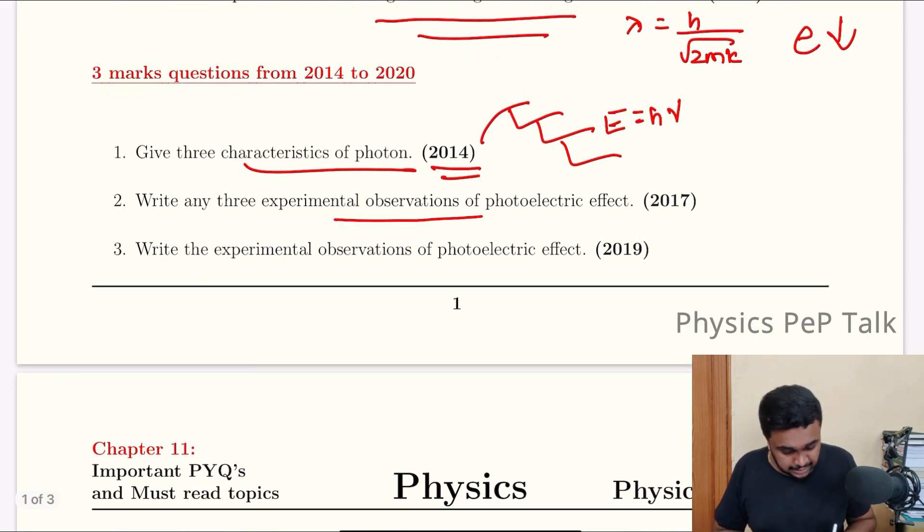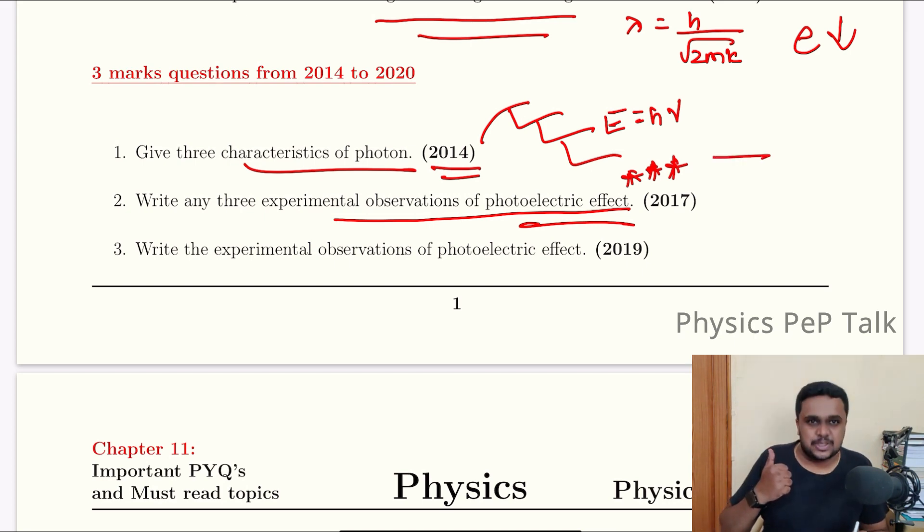Write any three experimental observation of photoelectric effect. This is a very important question. 3 marks or 5 marks - this question is most repetitive. What are the experimental outcomes? Photoelectric effect is an instantaneous process. That's the first point.